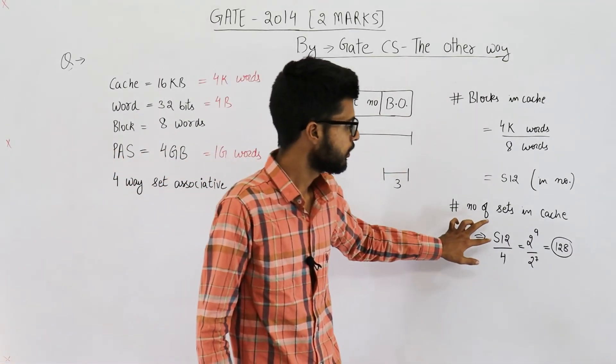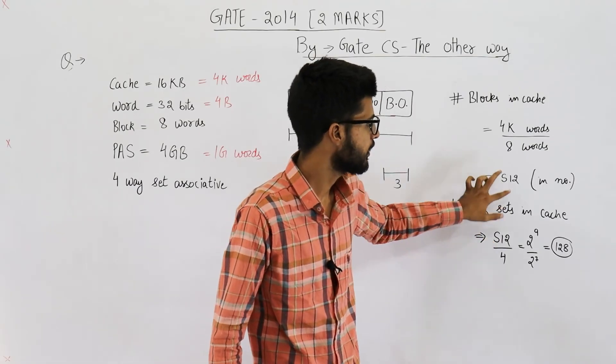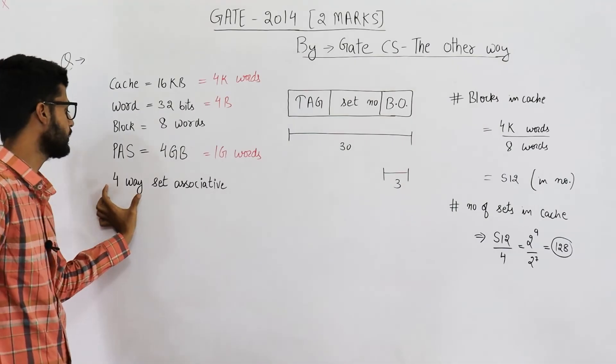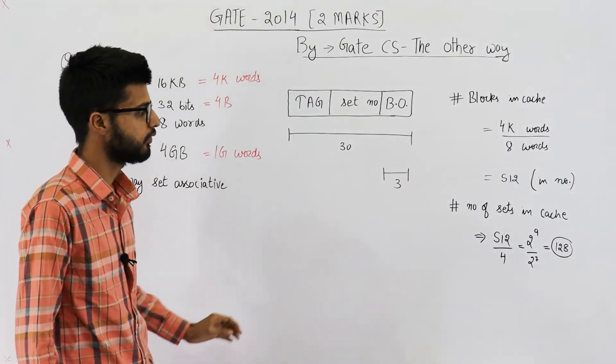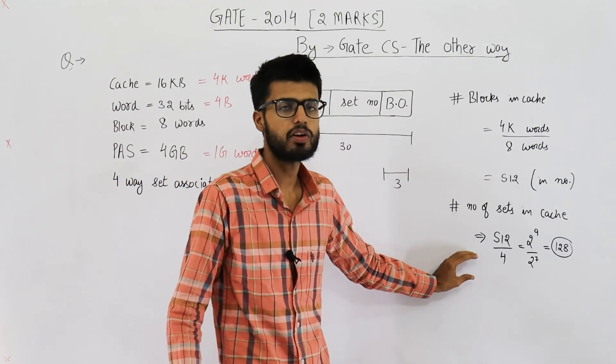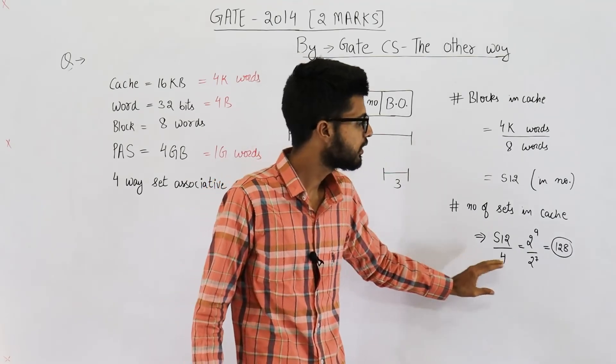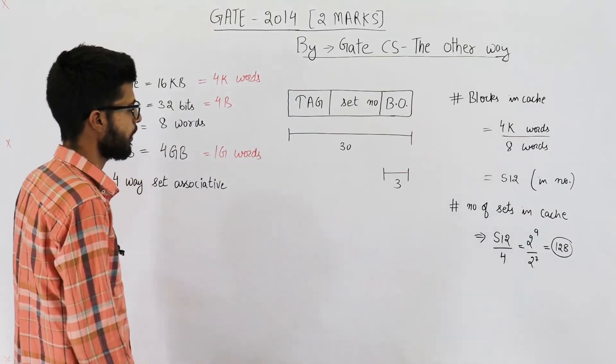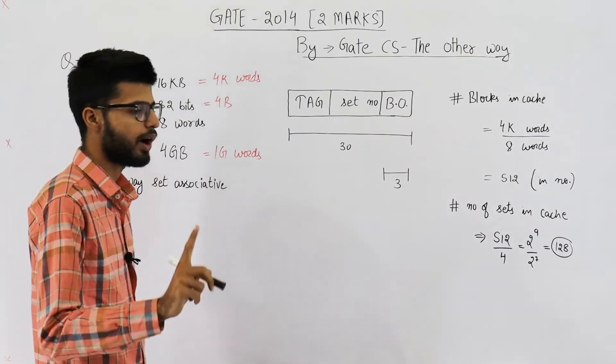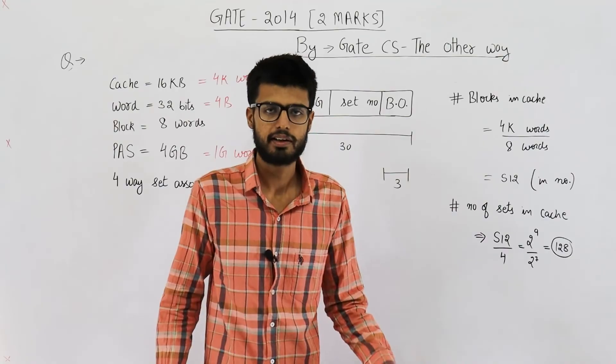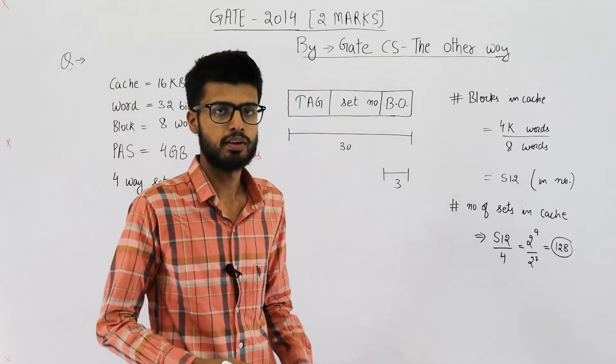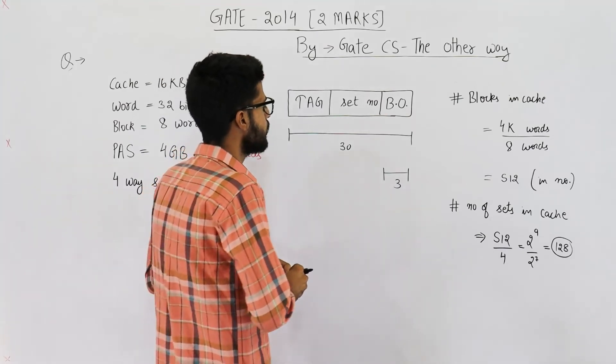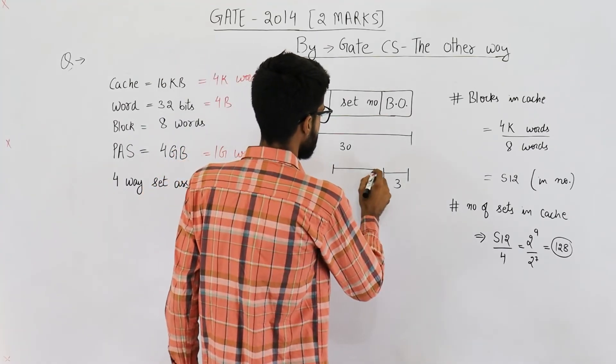How? See, total number of blocks in cache is 512. Number of blocks per set is 4. So if we divide total number of blocks by number of blocks in one set, we will get the total number of sets, which is 128 in this case. Now to identify one of 128 items or 128 blocks, we need address of size 7. So you can see this part will be 7 bits.